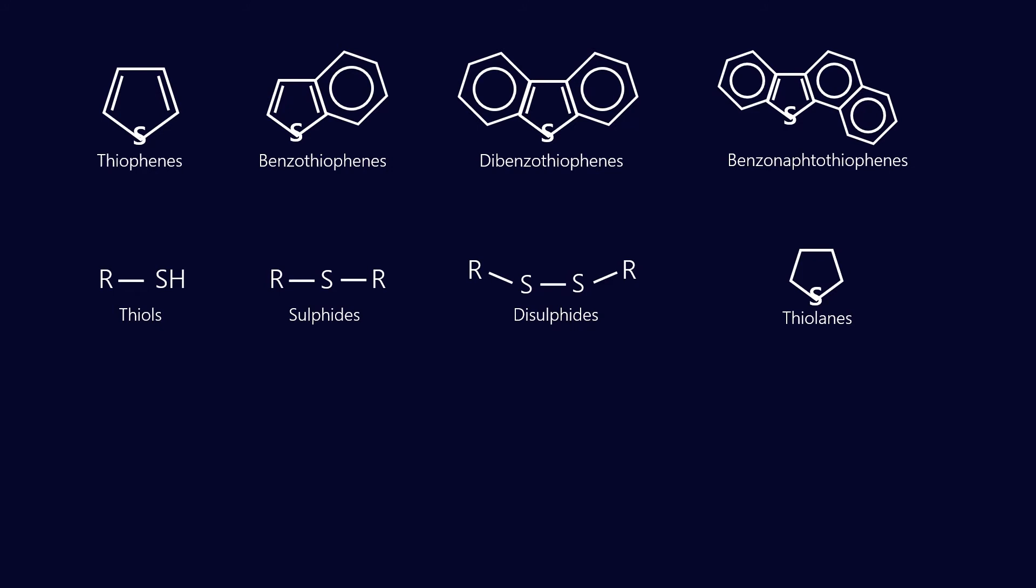You've got thiols and thiophenes, sulfides, disulfides, all of these different components. Now what was found very early on, in the 1930s and 1940s, is that some of these sulfur compounds had natural antioxidant properties. That's why in that video we said that the group 1s have better inherent oxidation stability than group 2s and group 3s do.